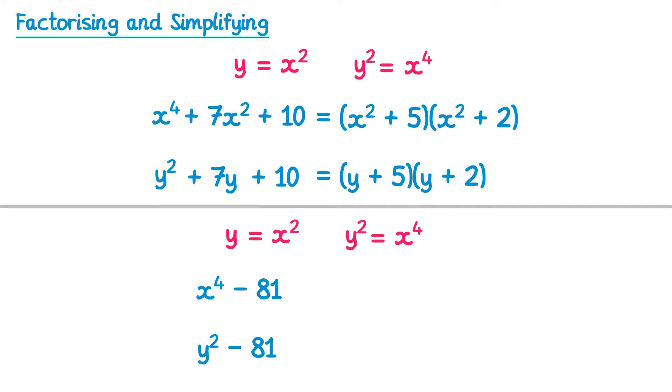You should recognise this as the difference of two squares, which equals (y + 9)(y - 9). Now we use the first part of that substitution again, we'll replace the y's with x², so we end up with (x² + 9)(x² - 9).